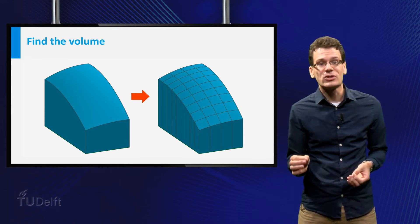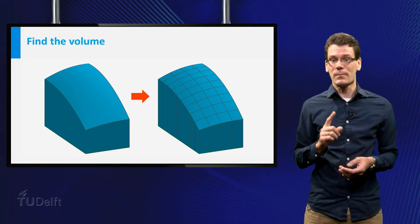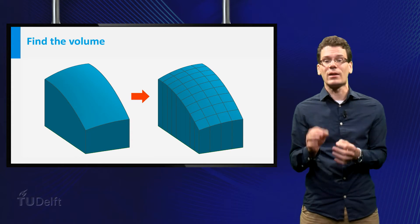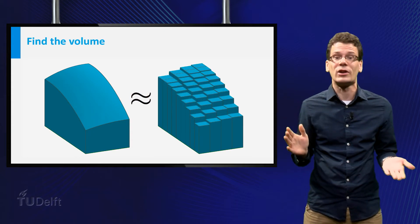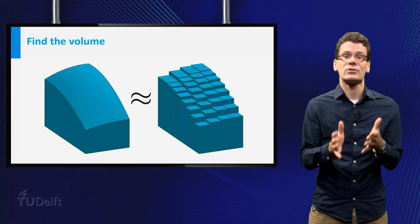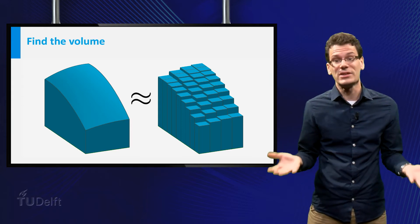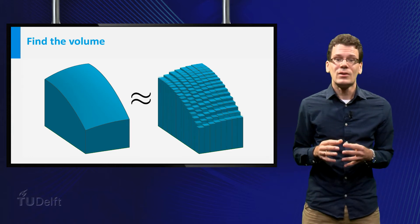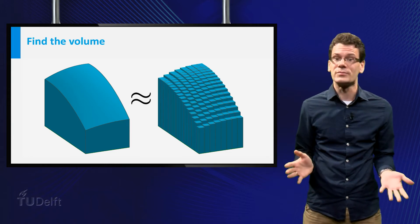Now the volume of each column may still be hard to find, but we can approximate each column by a box. Then the total volume is approximately equal to the sum of the volumes of the boxes. And that is easy to calculate. We can make the approximation better by taking more columns.